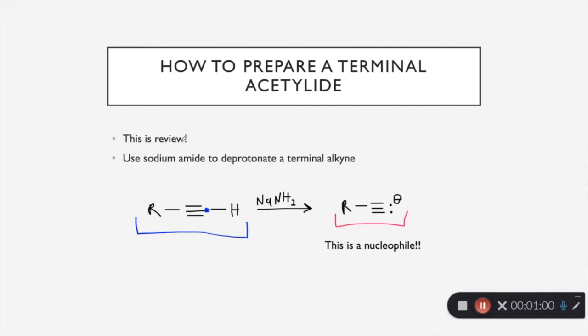So how we do this is that we use sodium amide right here to deprotonate the terminal alkyne. It grabs that hydrogen, and it donates its electrons back to this carbon right here. So then you're left with the acetylide, which has a lone pair and a negative charge. And you can in turn use this as a nucleophile. And that's what we're going to see in the next slide.